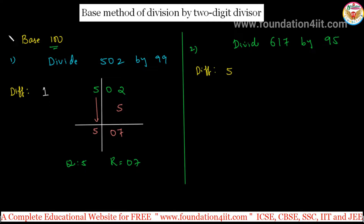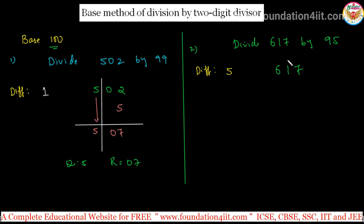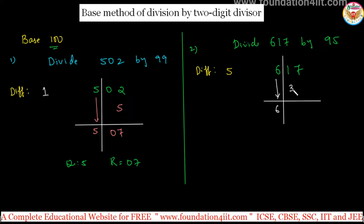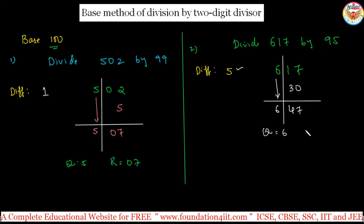The question is 617. Count from the right side — two digits. Using the same method, bring 6 down and multiply: 6 times 5 is 30. Then add 17 plus 30, which is 47. So the quotient is 6 and the remainder is 47. Compared to the usual method of working through the 95 times table, this is an easy and fast method to solve it.